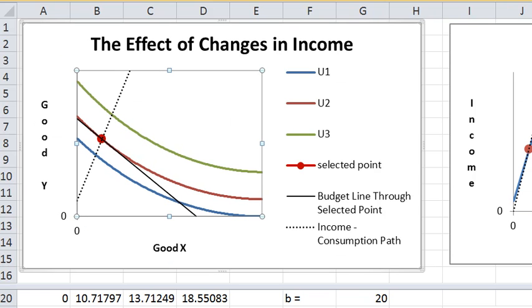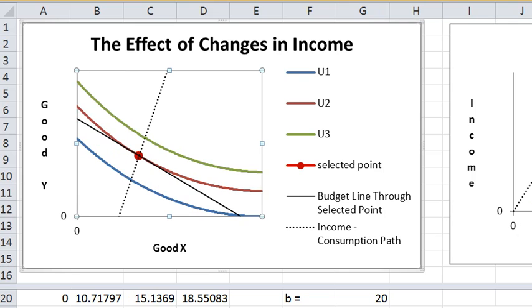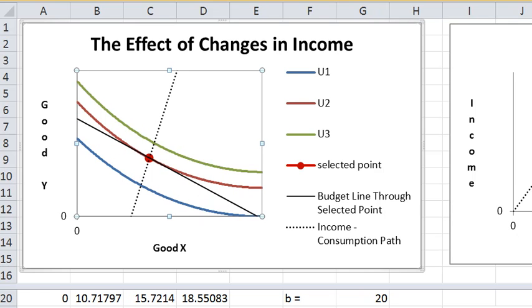So you can raise the price of X or you can lower the price of X. There we go, and here's even more dramatic, and that changes the whole path here. This thing is called the income consumption path or the income consumption curve. It shows how the consumer's choice changes with respect to income.